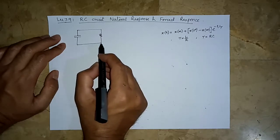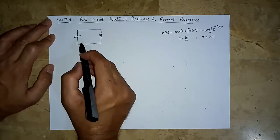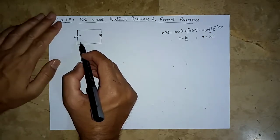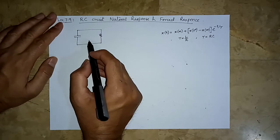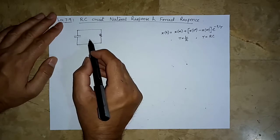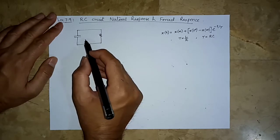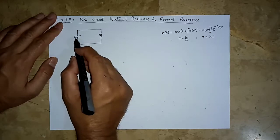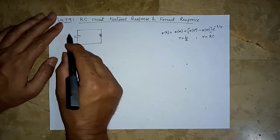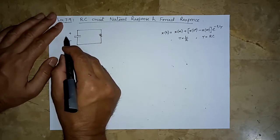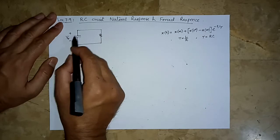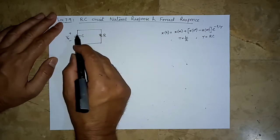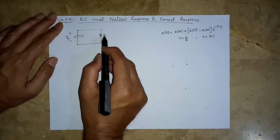A charged capacitor can exist without being connected in another circuit, but an inductor cannot exist without a circuit where current flows. A charged inductor must have current flowing through it, whereas a charged capacitor only needs a voltage across it. So we know the initial voltage is V₀ across this capacitor, and it is going to dissipate this stored energy in the resistor over time.